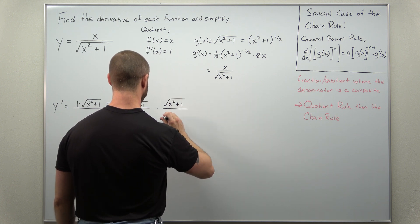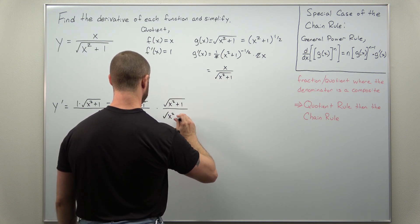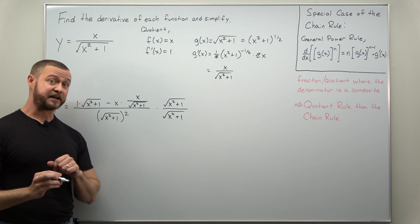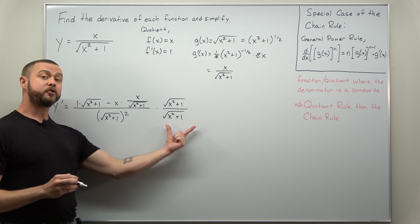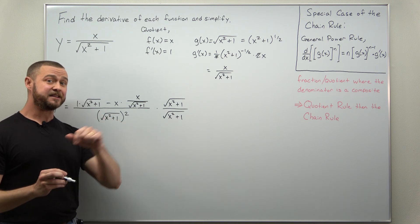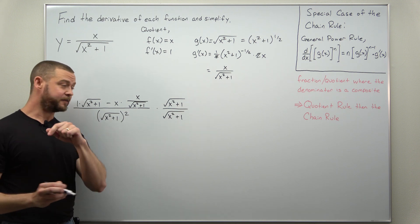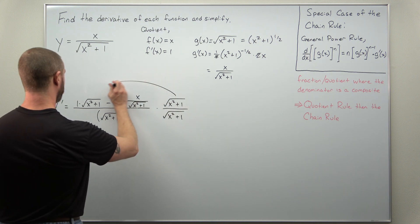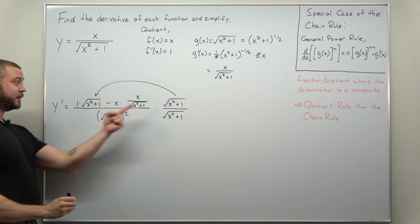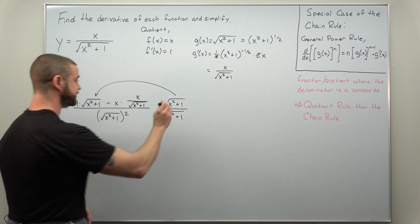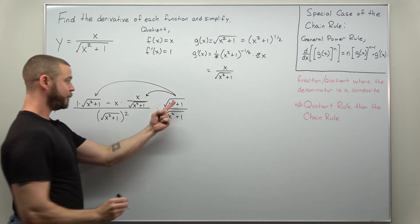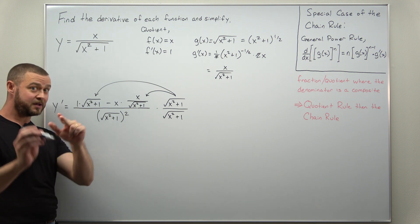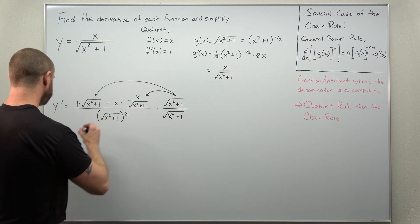We're going to multiply the numerator by the square root of x squared plus one, and we're going to multiply the denominator by the square root of x squared plus one — notice we're multiplying by one, a quantity divided by itself. The benefit is when we take that square root of x squared plus one into the numerator and distribute it, the square root times itself cancels out, and more importantly that factor also cancels with the square root in the g prime term.